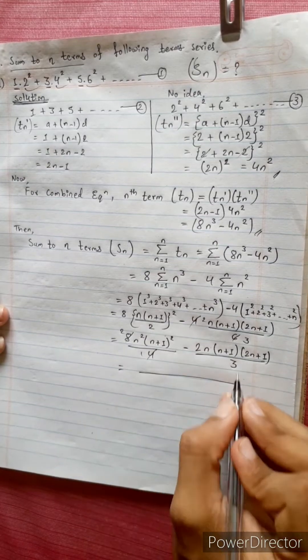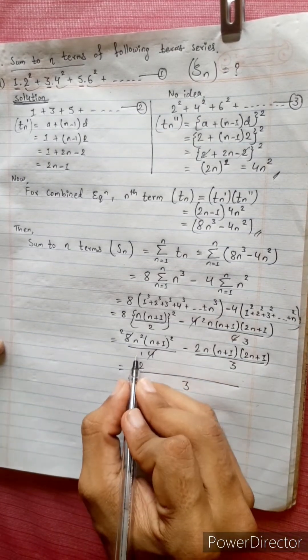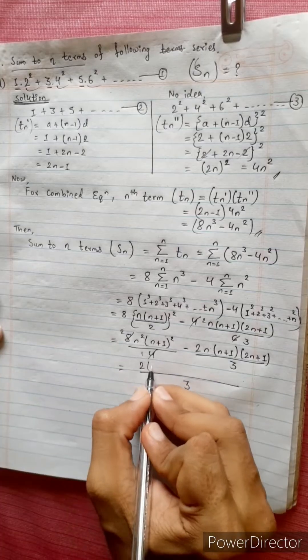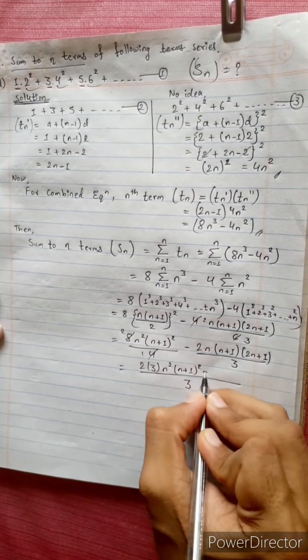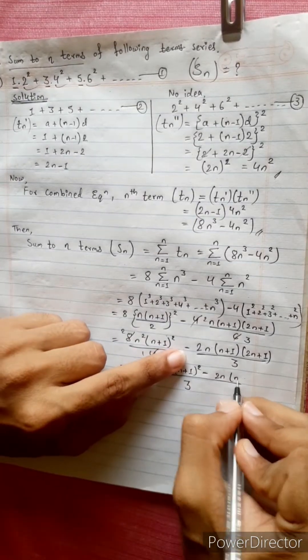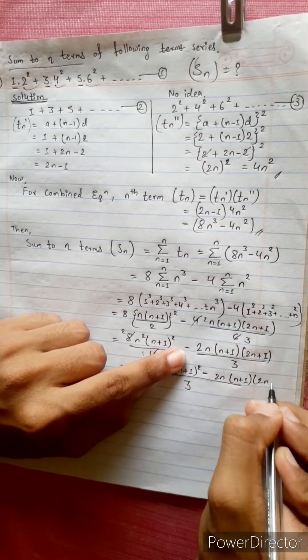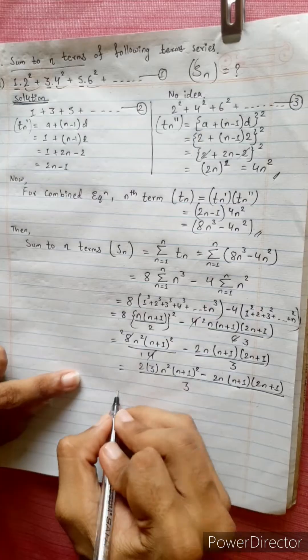Equals to 2 times n square times n plus 1 square minus 2n times n plus 1 times 2n plus 1 divided by 3.